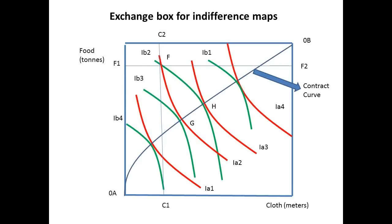As before, we are going to turn one of these upside down. We have turned the indifference curve map for individual B upside down to get our box diagram, and we have also drawn in our contract curve to link together the tangency points. At point F, individual A consumes OAF1 tons of food and OAC1 meters of cloth. We can see that moving to a point such as G would be a situation where an individual was better off, but the other is no worse off.